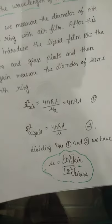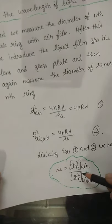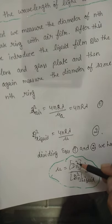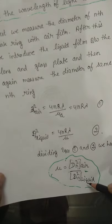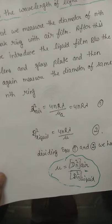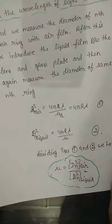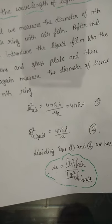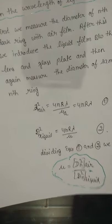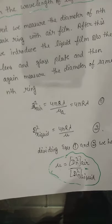That means if we know the diameter of the nth ring in air film and the diameter of the nth ring in liquid film, we can find the refractive index of the liquid film — even when the wavelength of light is not known.